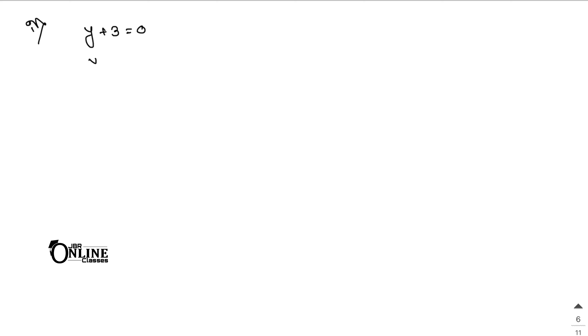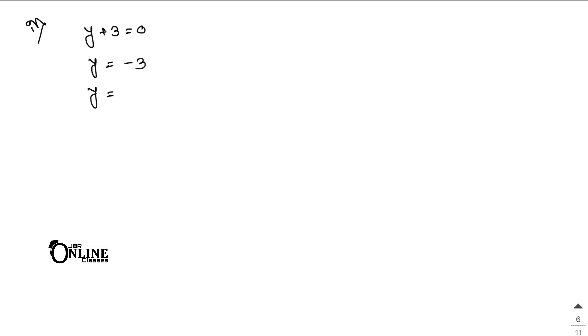For sum 9(iv), the equation is y plus 3 equal to 0, so y equals minus 3. This can be written as y equals 0·x minus 3, meaning m equals 0 and c equals minus 3 as the final answer.